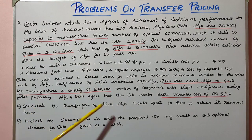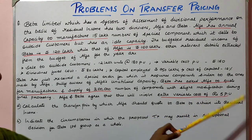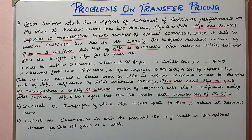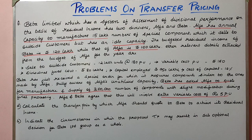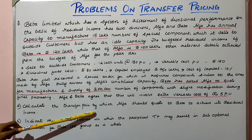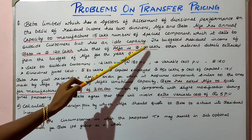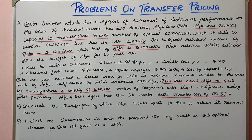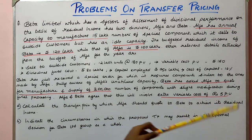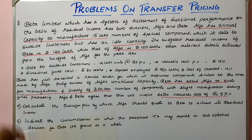We are asked to calculate the transfer price at which Alpha should sell to Beta in order to achieve its residual income of 100 lakhs. We are also asked to identify the circumstances in which the proposed transfer price may result in a suboptimal decision for Beta Limited group as a whole.